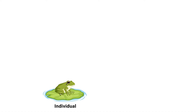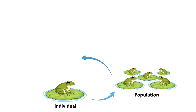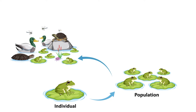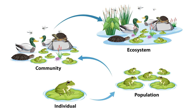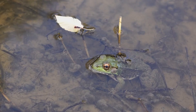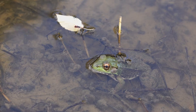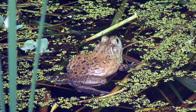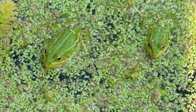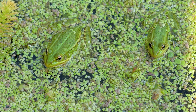At each level, from the individual frog to the entire ecosystem, every element plays a vital role. The frog, for instance, is a predator and prey, a breeder and a consumer of resources. It interacts with its environment, contributing to the nutrient cycle and maintaining the delicate balance of the pond.